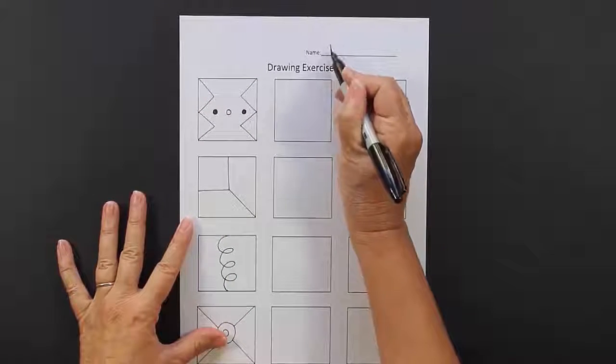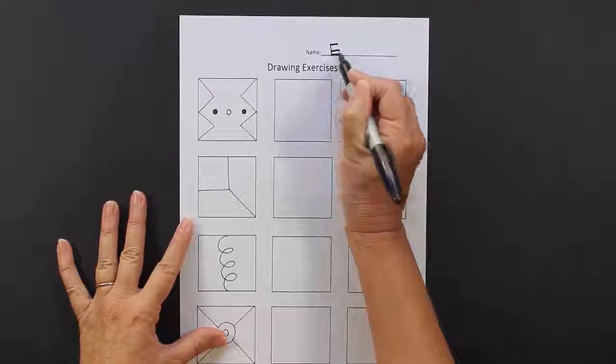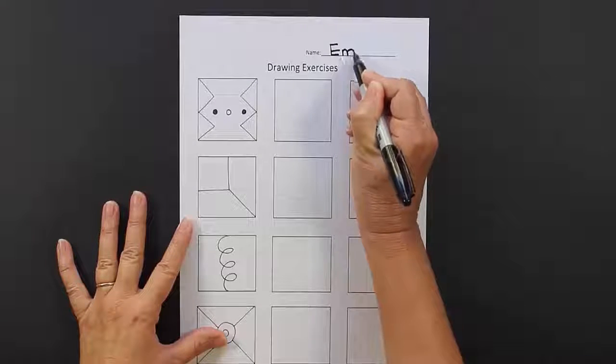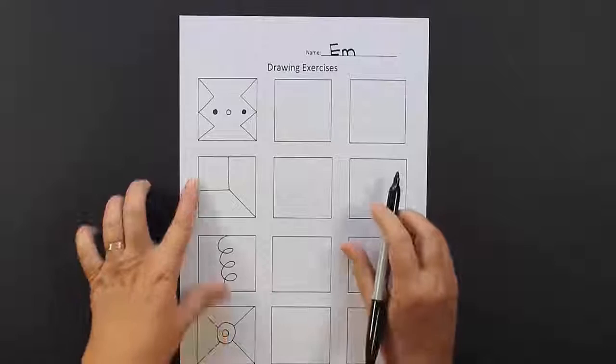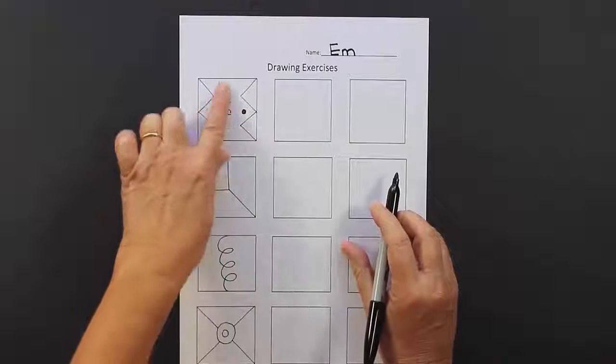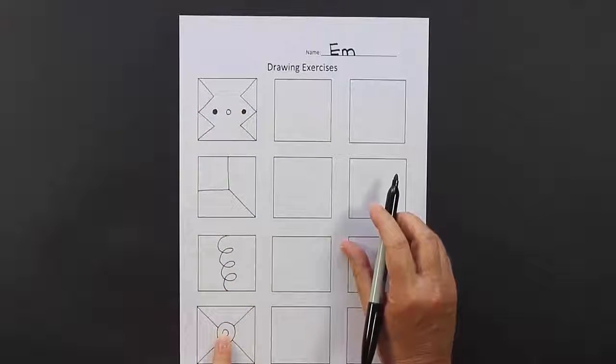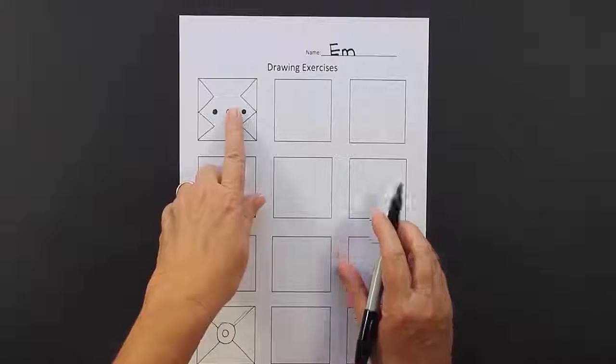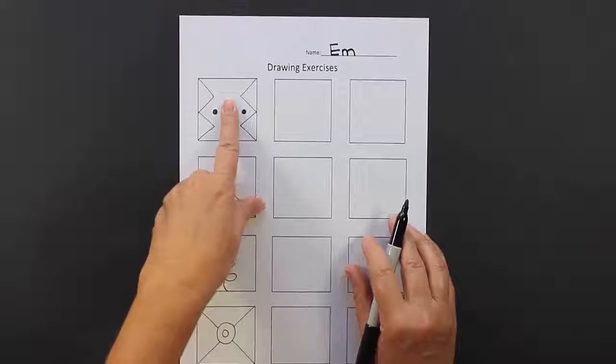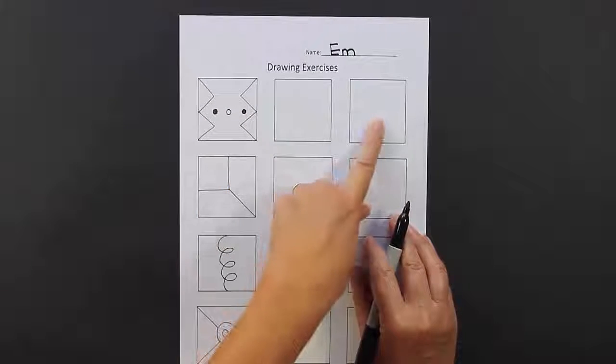I'm going to put my name first at the top of my paper where it says name, and then I'm going to look in each box on the left and copy what's inside the first box into the second and the third box.